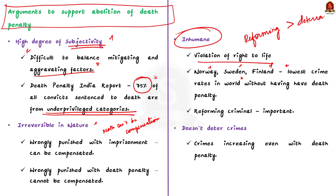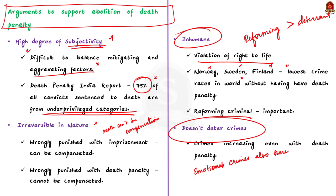The fourth argument is that the death penalty does not deter crimes. Statistical evidence shows that deterrence does not work. Some of those executed may not have been capable of being deterred because of mental illness or other defects. Moreover, some capital crimes are committed in such an emotional state that the perpetrator did not think about consequences. Death has been prescribed in rape cases since 2013, but rape continues to occur and the brutality of rapes has in fact increased manifold. This compels us to question the effective deterrence of the death penalty for such heinous crimes.